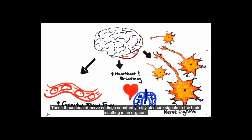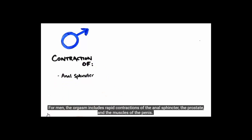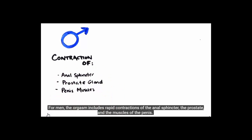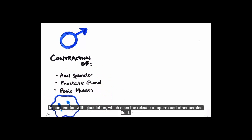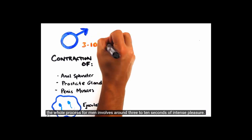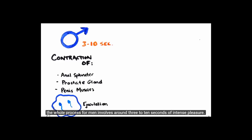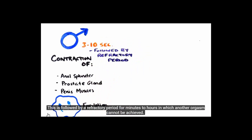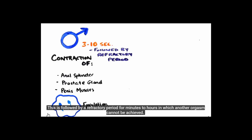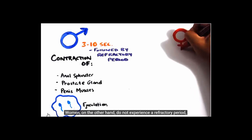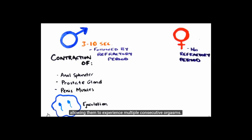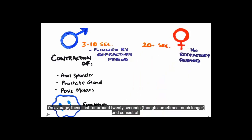These thousands of nerve endings constantly relay pleasure signals to the brain, resulting in an orgasm. For men, the orgasm includes rapid contractions of the anal sphincter, the prostate, and the muscles of the penis, in conjunction with ejaculation — the release of sperm and seminal fluid. The whole process involves around 3 to 10 seconds of intense pleasure, followed by a refractory period from minutes to hours in which another orgasm cannot be achieved. Women do not experience a refractory period, allowing multiple consecutive orgasms, which on average last around 20 seconds.